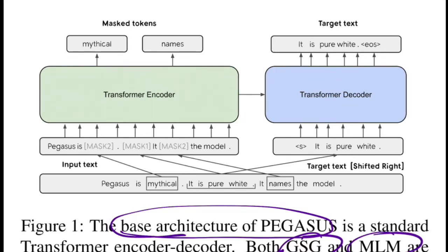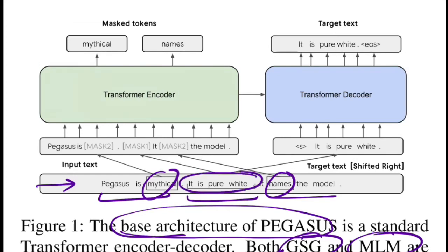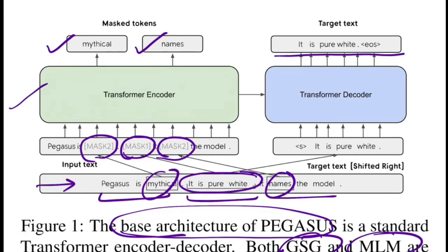For the base architecture, the input text has three sentences. You randomly mask some words — here they masked 'mythical' and 'names' — and you also mask entire sentences; S2 is replaced with mask-one. Masked words are replaced with mask-two. All of this goes to the encoder, which produces the masked words (as in BERT), while the decoder produces the masked sentence in an autoregressive manner. We'll see later how they decide which sentences to mask in the document.